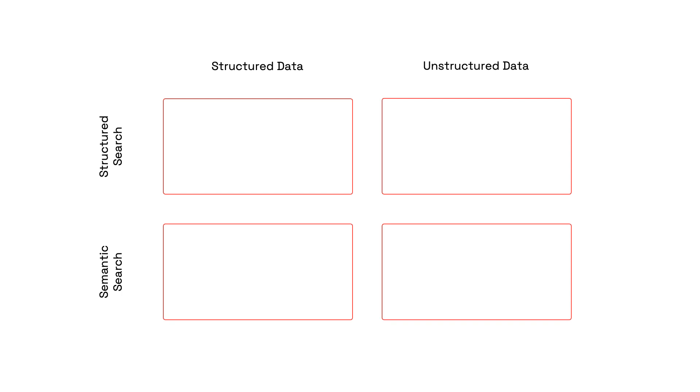Thanks for watching the video. Wait — it's actually a little more nuanced than that. We have two types of data, structured and unstructured, and two ways of searching, structured and semantic. So what we have here is a matrix. Let's fill in the quadrants and see what we learn.